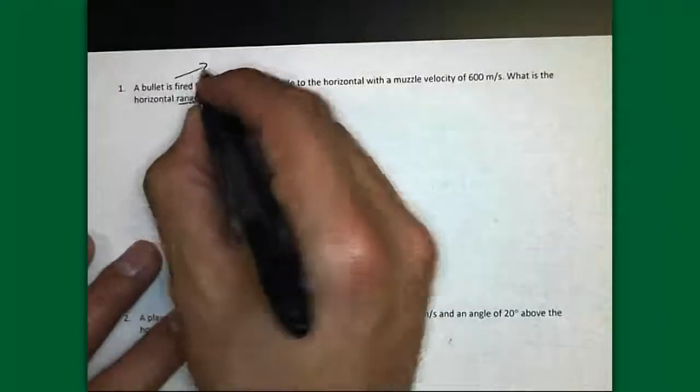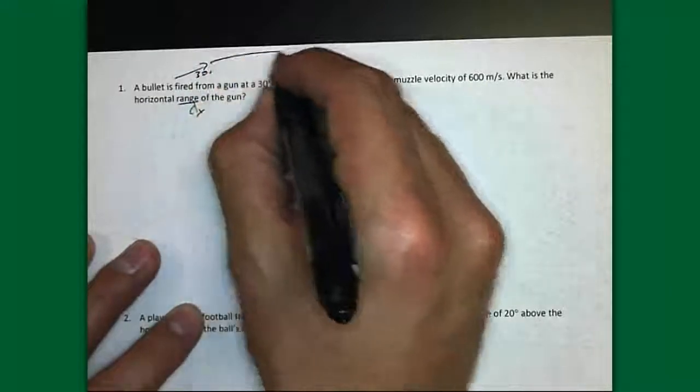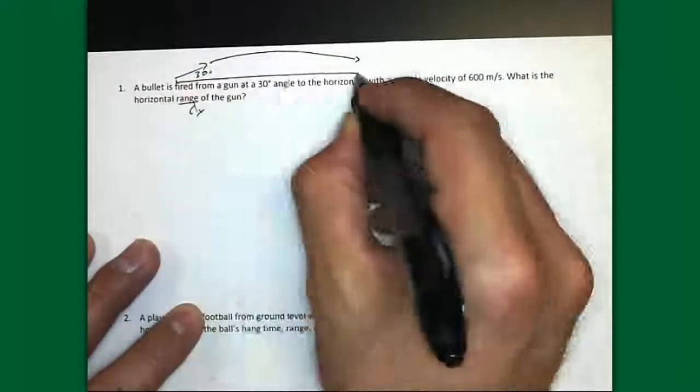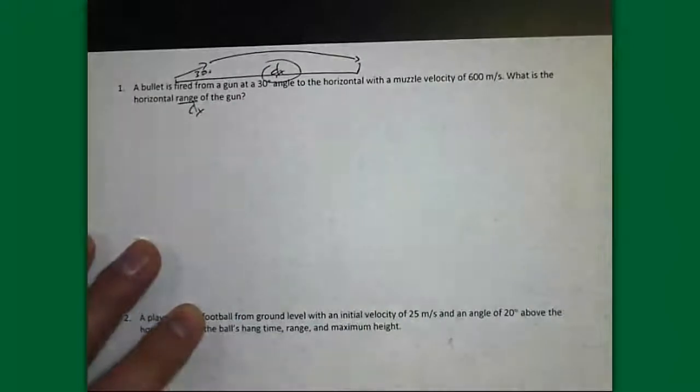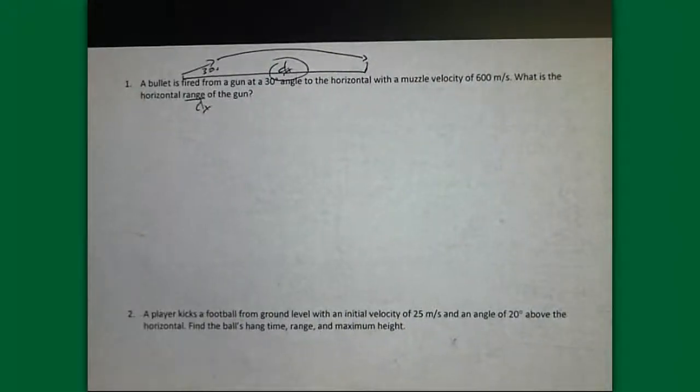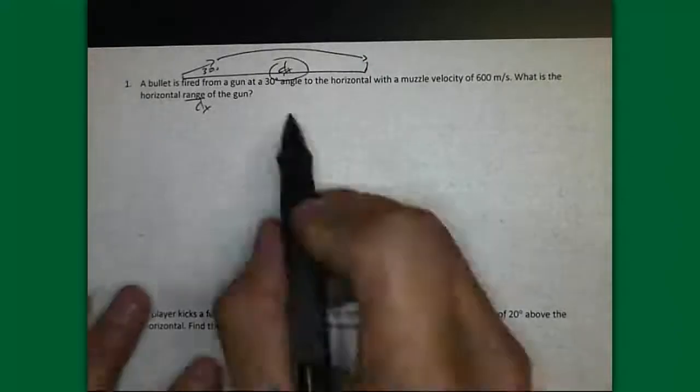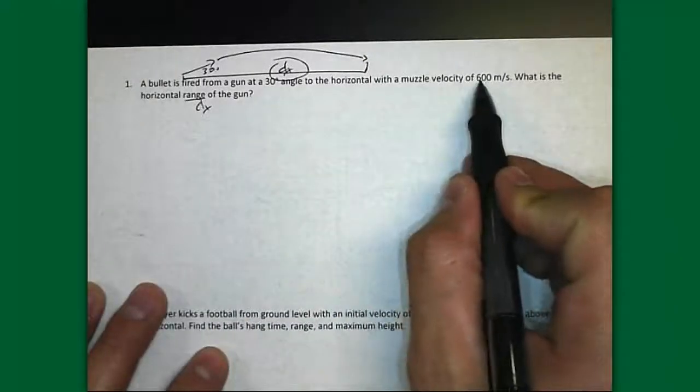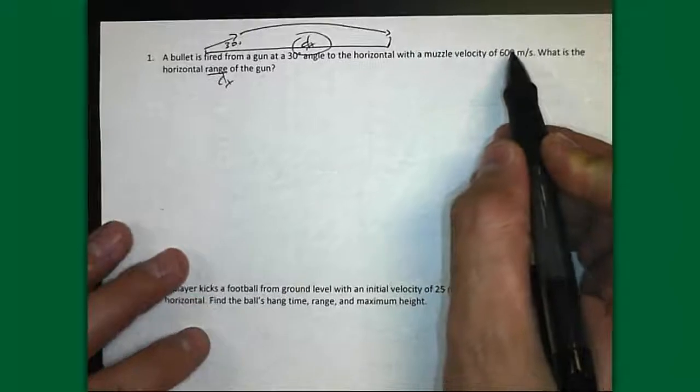So this gun is fired at a 30 degree angle and it's going to go like this and we want to know what is this DX. We want to know how far it goes. The first thing you do, the very first thing you do whenever you see an angle and a velocity is you must resolve the vector into X and Y components.